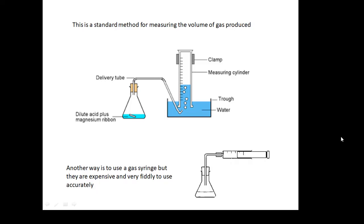Now, this is a standard method for measuring the volume of gas produced. It's called a displacement method. You should definitely be familiar with it, be able to sketch it. You could always use something called a gas syringe, but they're expensive and very fiddly to use. And usually we don't need to be that accurate. The displacement method works perfectly well.